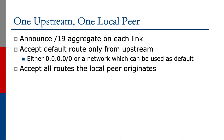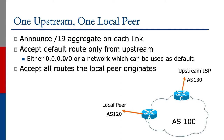We accept all routes that the local peer originates. This peer is literally an equivalent network, so we're swapping the routes that we introduce into the internet with them. This will ensure that local traffic will use the local link between them and ourselves, rather than going through the upstream transit provider and attracting transit costs.